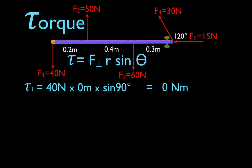I want to point out the units. Because we're multiplying a force times a distance, we have the newton meter — this is the unit for torque. The units for torque are either the newton meter or the meter newton; you'll see it written both ways. This is not work, and this is not a joule. The units for work is the joule, which we often say is the newton meter, but it's a different unit because this is torque.